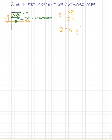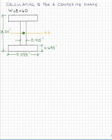For rectangular cross-sections, this process is relatively straightforward. For composite cross-sections, however, it's a little bit more complicated. Let's consider this W18 by 60 shape, and we'll discuss calculating the first moment of the outward area at various planes of interest.